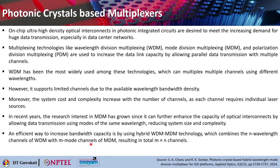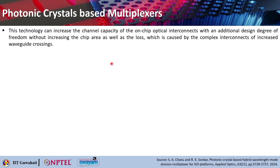An efficient way to increase bandwidth capacity will be by using hybrid WDM-MDM technology — wavelength division multiplexing combined with mode division multiplexing. If there are N channels for WDM combined with M mode channels of MDM, you can create M×N number of channels for data transmission. This technology can increase the channel capacity of on-chip optical interconnects with an additional design degree of freedom, without increasing the chip area or the loss. Usually whenever you make complex interconnects, the number of waveguide crossings increases and you have more losses, but here you can still increase channel capacity without increasing loss and chip area.